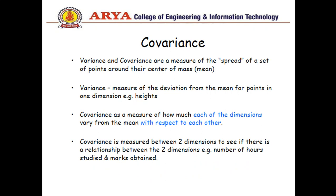Let's move to variance. Variance is the measure of variation from the mean for points in one dimension, for example height. Covariance is a measure of how much each of the dimensions vary from the mean with respect to each other. Covariance is measured between two dimensions to see if there is a relationship, for example number of hours studied and marks obtained.